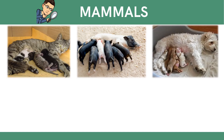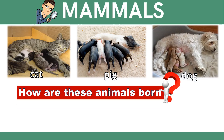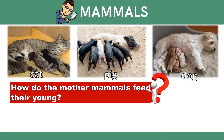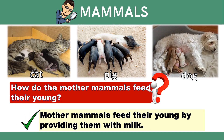How about these animals, class? Do you know them? They are cat, pig, and dog. These animals are also examples of mammals. How are these animals born — are they hatched from eggs or born alive? Very good! They give birth to their young alive. How do the mother mammals feed their young? Mother mammals feed their young by providing them with milk.